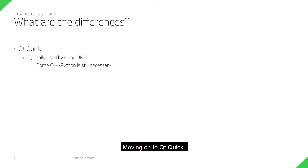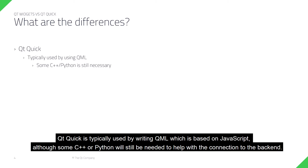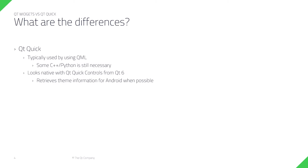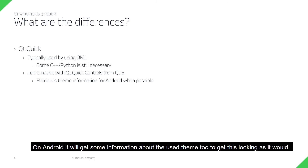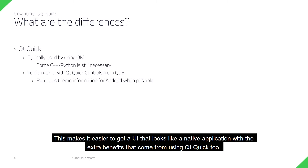Moving on to Qt Quick. Qt Quick is typically used by writing QML, which is based on JavaScript, although some C++ or Python will still be needed to help with the connection to the backend. As of Qt 6, it is possible to get a native look for controls that are using Qt Quick controls as the base on the desktop. On Android, it will get some information about the current theme too, to get this looking as it would natively.